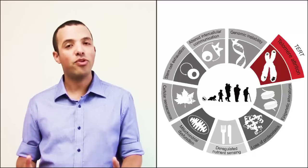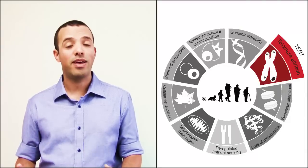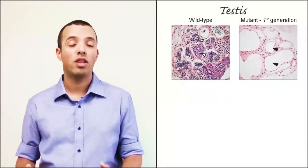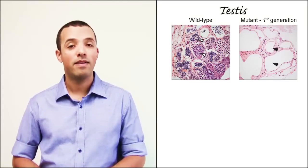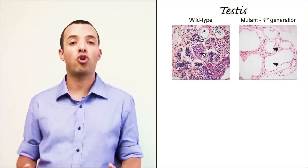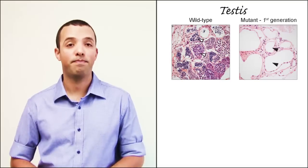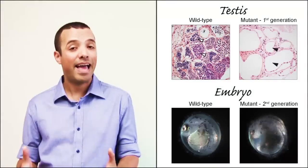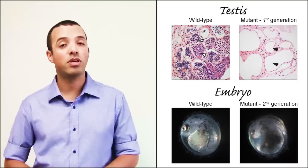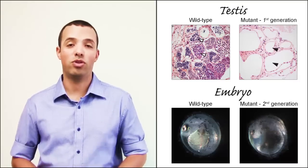When we generated telomerase-deficient fish, we saw that highly proliferative tissues like the reproductive system and the gut were very strongly affected, very similar to a disease in humans called dyskeratosis congenita. The next generation of these fish actually did not even hatch from the eggs or develop properly, possibly because their telomeres were way too short.